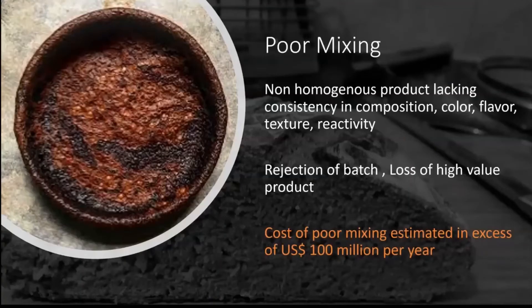Before we understand mixing, let us understand what poor mixing is. Poor mixing is basically a non-homogeneous product that lacks consistency in composition, color, flavor, texture, and reactivity when it comes to chemical reactions. Poor mixing can lead to rejection of batches and loss of high-value products.